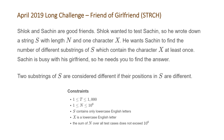The constraints for this problem are that we'll have t test cases between 1 and 1,000, and the length of our string s is going to be between 1 and 10 to the 6th. S contains only lowercase English letters, x is a lowercase English letter, and the sum of n over all test cases does not exceed 10 to the 6th. Due to the fact that we have n up to 10 to the 6th, we need to do better than quadratic — we can't just generate all substrings and check if it contains x because this will definitely time out.